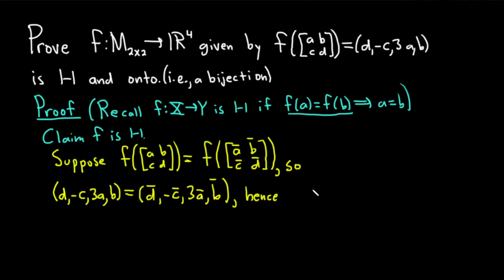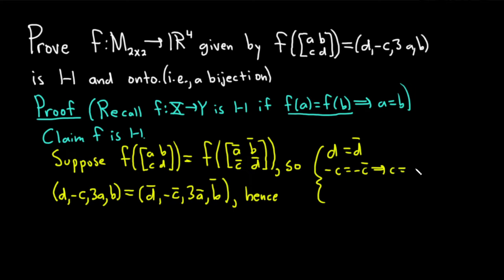Since two 4-tuples are equal, their components must be equal. So we get: d = d̄, then -c = -c̄ which implies c = c̄, then 3a = 3ā which implies a = ā (dividing by 3), and likewise b = b̄.